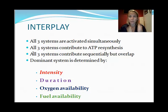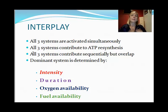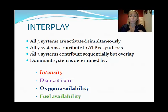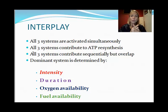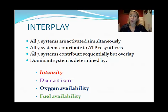For example, if we sprint for one minute, the dominant energy system will initially be ATP-CP because it provides ATP without oxygen. While our body is catching up — respiratory rate and heart rate increasing — we are in oxygen deficit, so we produce energy anaerobically. They are all activated and all contribute, but which one is dominant depends on four things: exercise intensity, duration, whether oxygen is available, and whether fuel is available.